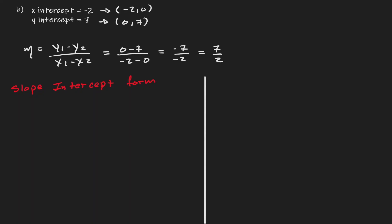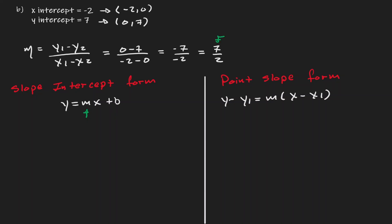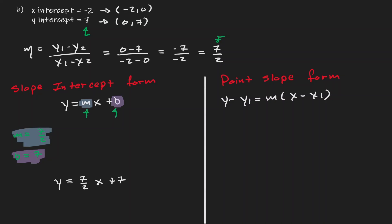Now let's decide which form to use — let's show both. For the slope-intercept form, y equals mx plus b, we need m and b. m is the slope, which we have as seven over two, and b is the y-intercept, which we have as seven. So we just plug in our values: m equals seven over two and b equals seven. And we're done.